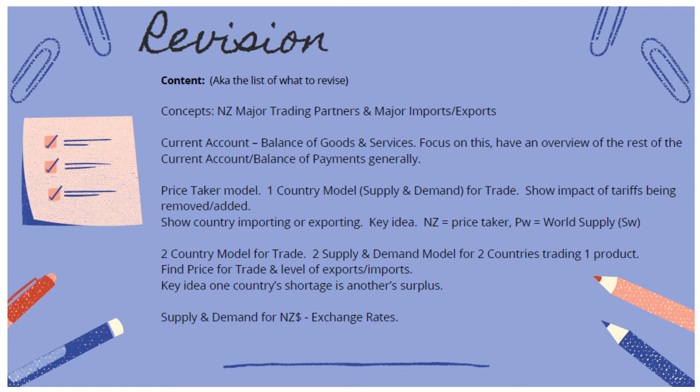The price-taker model was our first model — a one-country model. It looks like a supply and demand graph but is used for trade. You need to know how to show the impact of tariffs being removed and added, and how to show a country importing and exporting. Remember: X is exporting. If the world price is high, New Zealand sells its products overseas because it earns more. If the world price is lower, New Zealand buys that good in because it's cheaper.